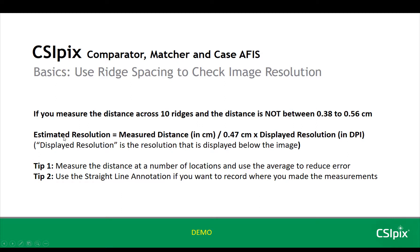The estimated resolution — your new resolution — will be equal to the measured distance you find with your measure tool divided by 0.47 centimeters (the measured distance must be in centimeters), multiplied by the displayed resolution shown below the image. Tip one for using this equation: measure the distance at a number of locations and use the average to reduce your error.